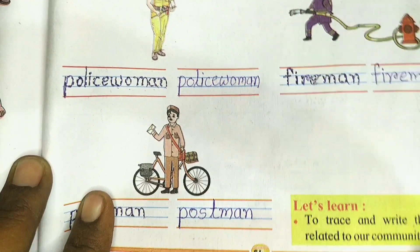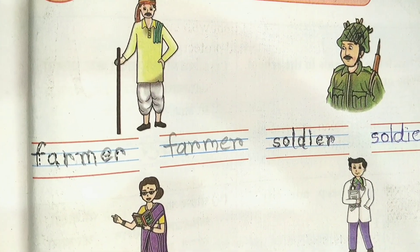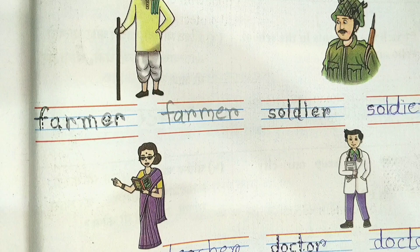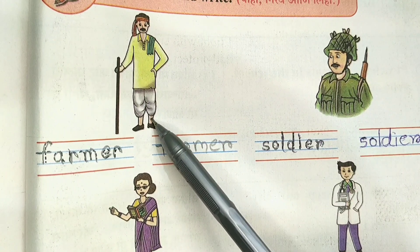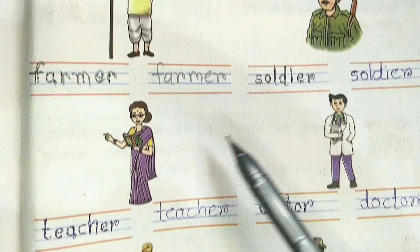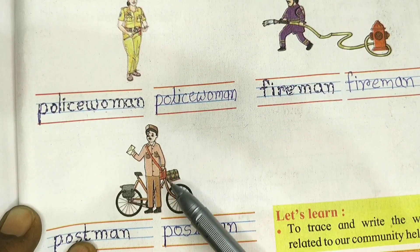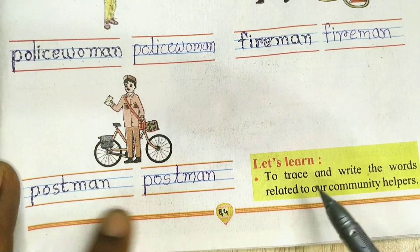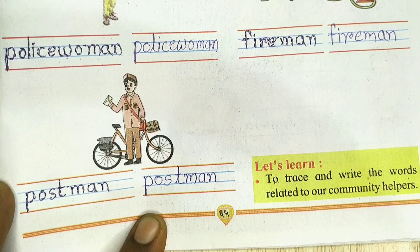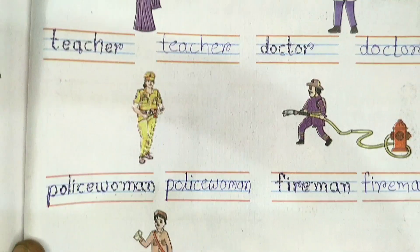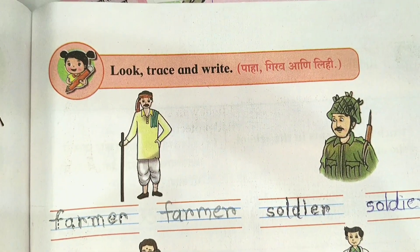Who brings our letters? So in this way, we have traced and written the names of our community helpers: farmer, soldier, teacher, doctor, policewoman, fireman, and postman. In this topic, we learned to trace and write words related to our community helpers. Goodbye, we will meet in another video. Bye-bye.